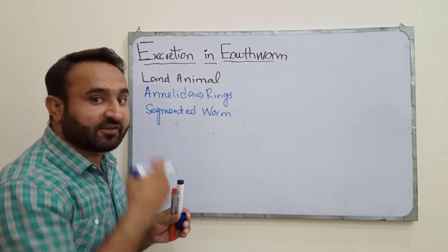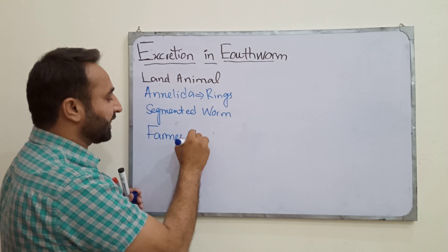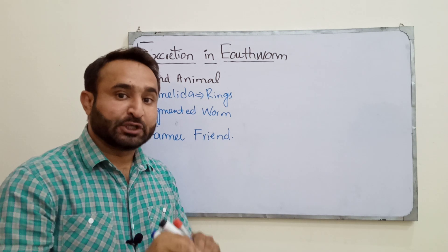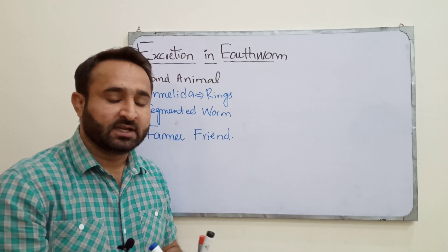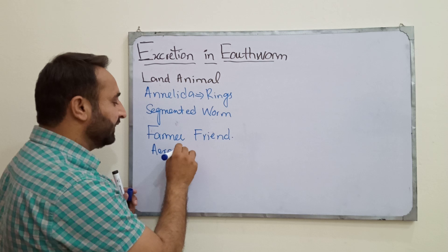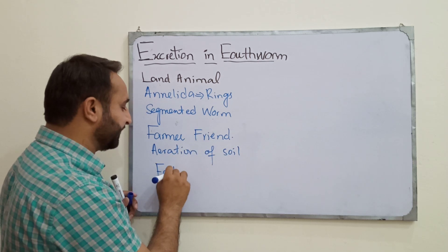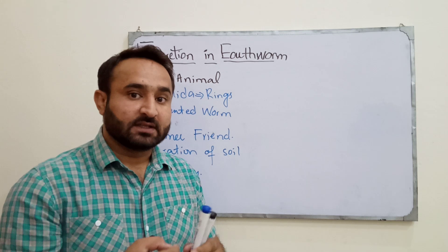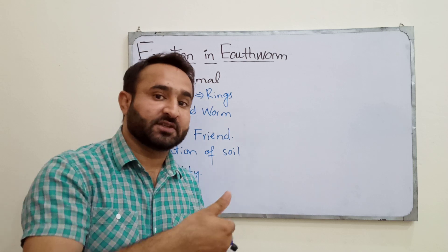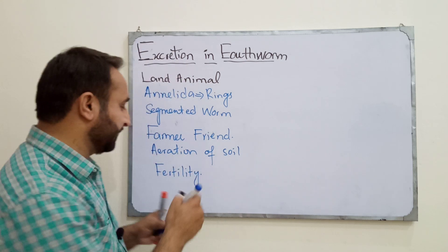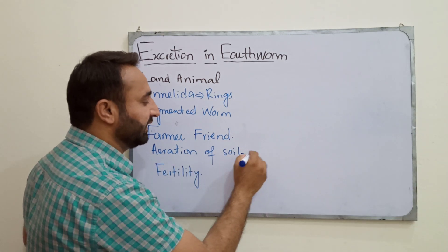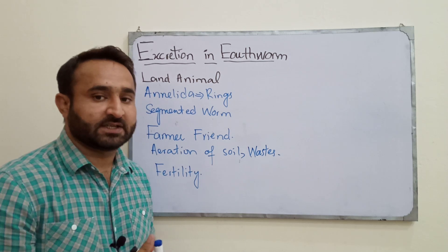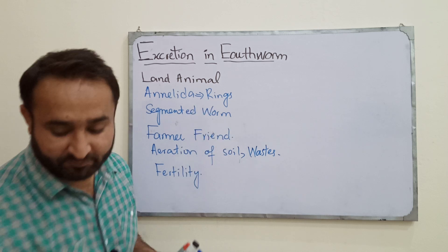Earthworm is a terrestrial animal and is said to be the farmer's friend. Earthworm eats all types of living and dead organic matter. During this, it burrows down and makes holes in the soil, which increases aeration of the soil and thus increases soil fertility. Also, it decomposes organic matter, converting it into waste that becomes fertilizer for the soil. Because of these two reasons, it is rightly called the farmer's friend.